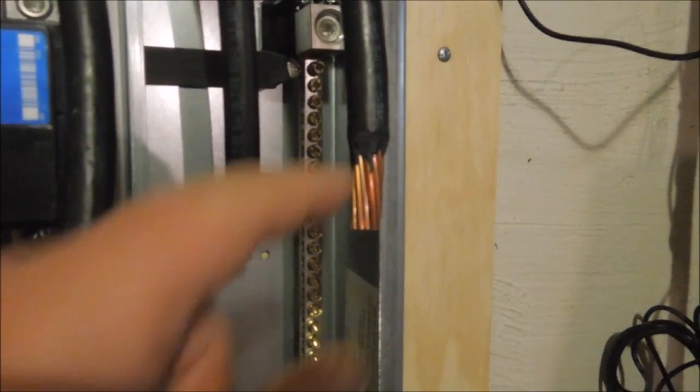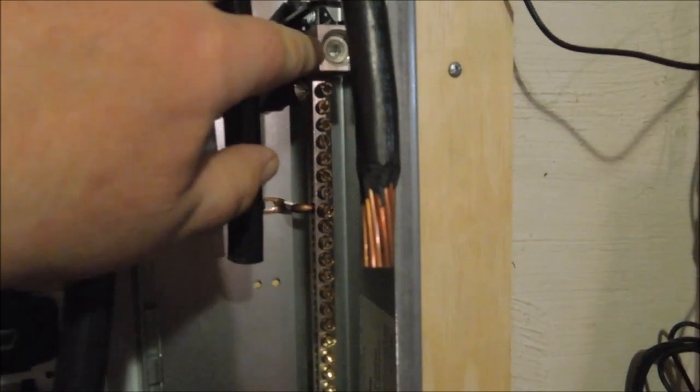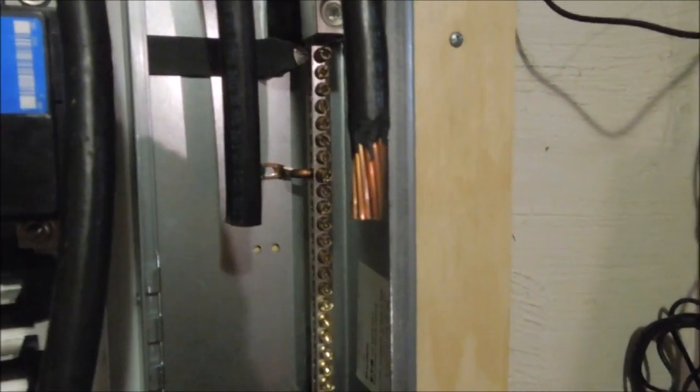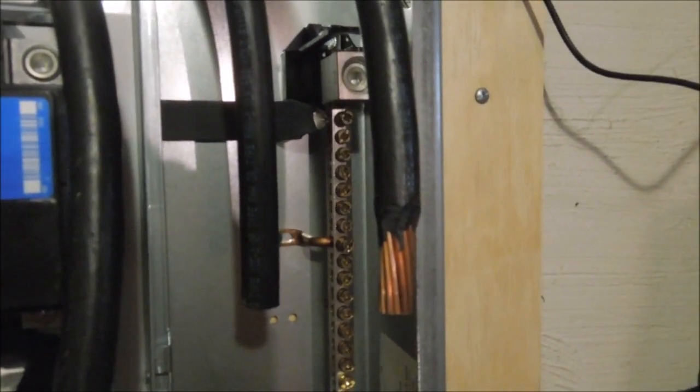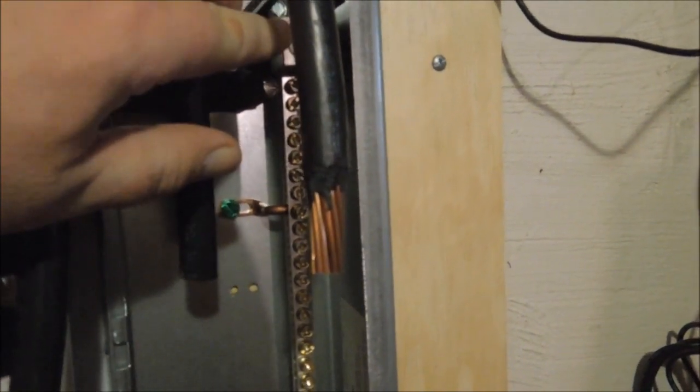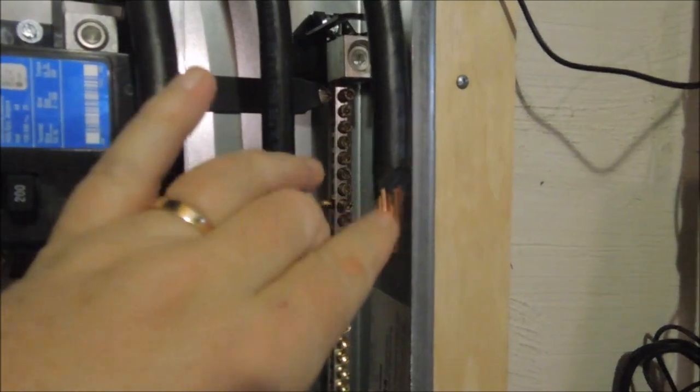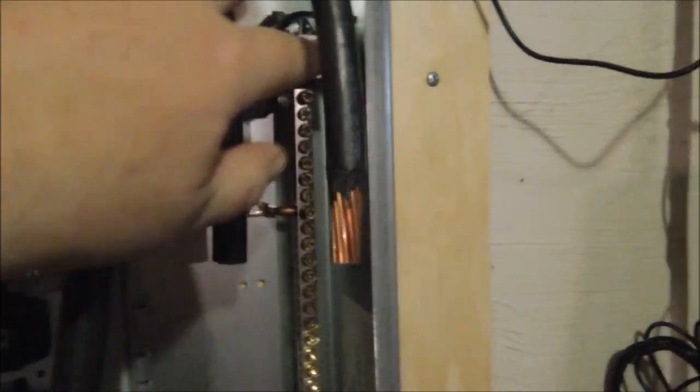The idea is that you want to strip this down far enough so that when you put it into the neutral connector, a little bit of the copper shows out the bottom so you're sure you've got the wire fully engaged. If you don't have a good connection at this point, you can generate a hot spot. So you always want to make sure that this connector is clean and fully engaged.